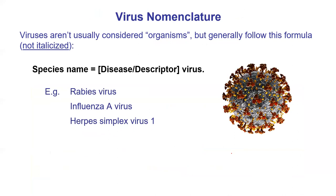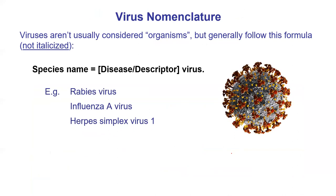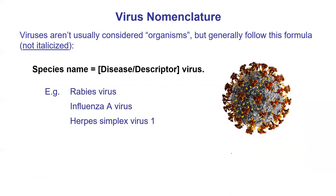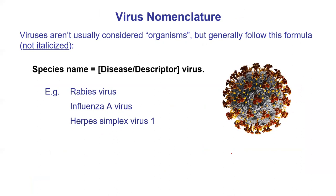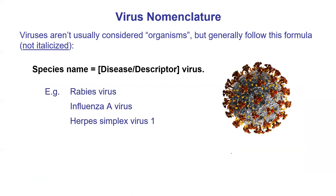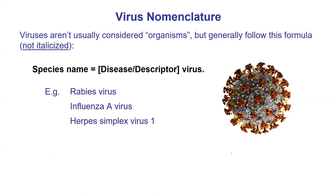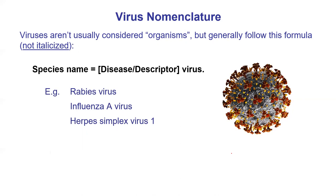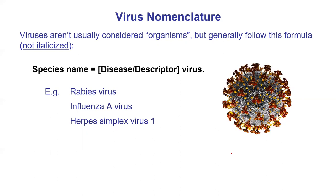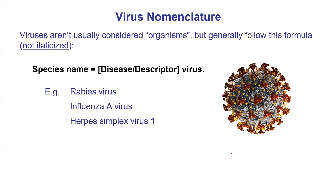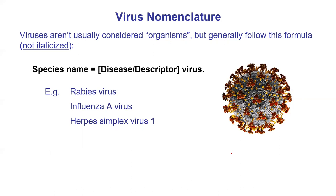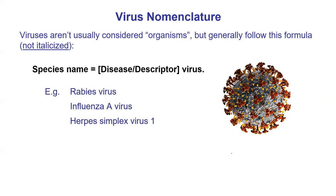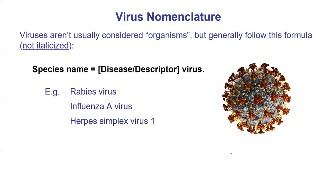So what about viruses? How are we going to name those things? Viruses aren't cells — they're not alive — and they have their own system. There is actually, believe it or not, an international committee for the nomenclature of viruses, and they don't agree on everything. Sometimes they're italicized, but not usually, so we won't italicize them because that's the general convention.